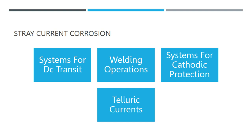There are four subtypes of stray current corrosion: systems for DC transit, welding operations, systems for cathodic protection, and telluric currents.